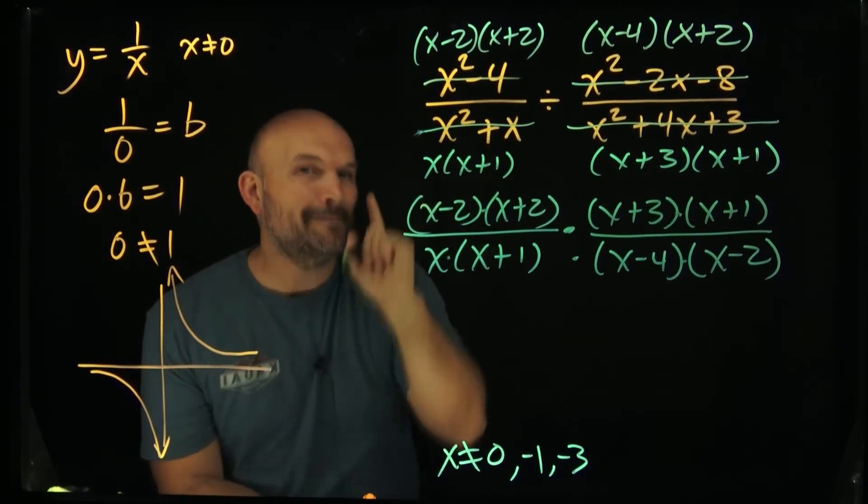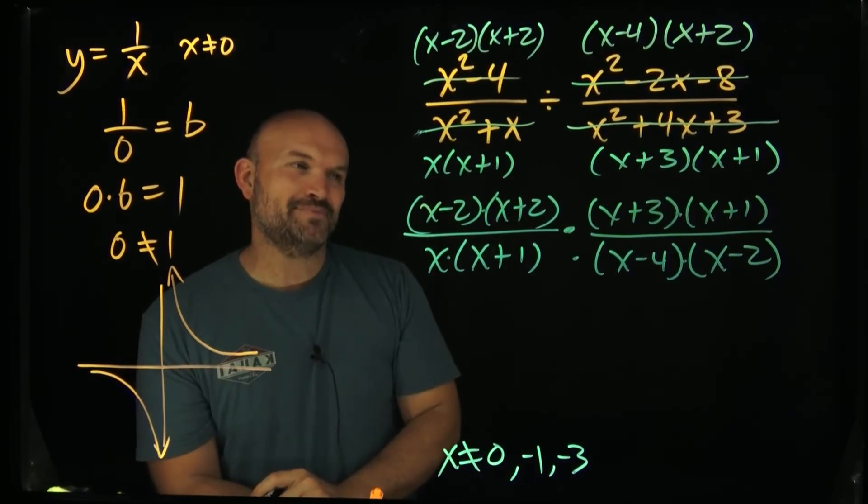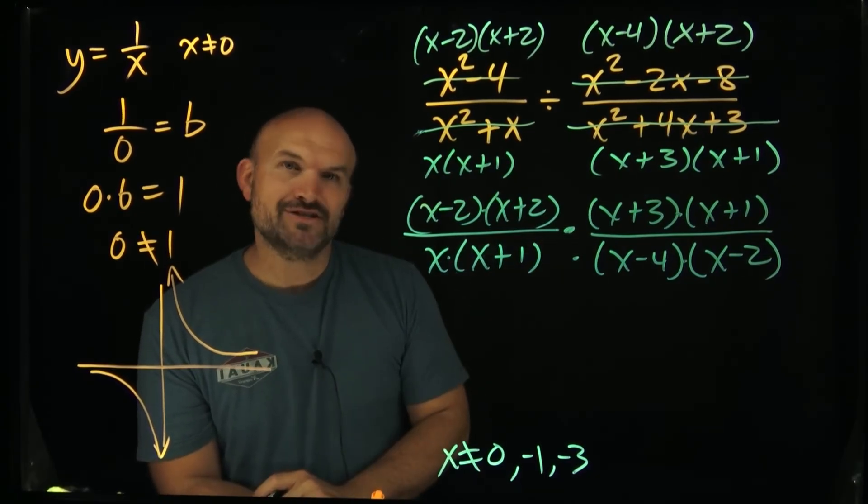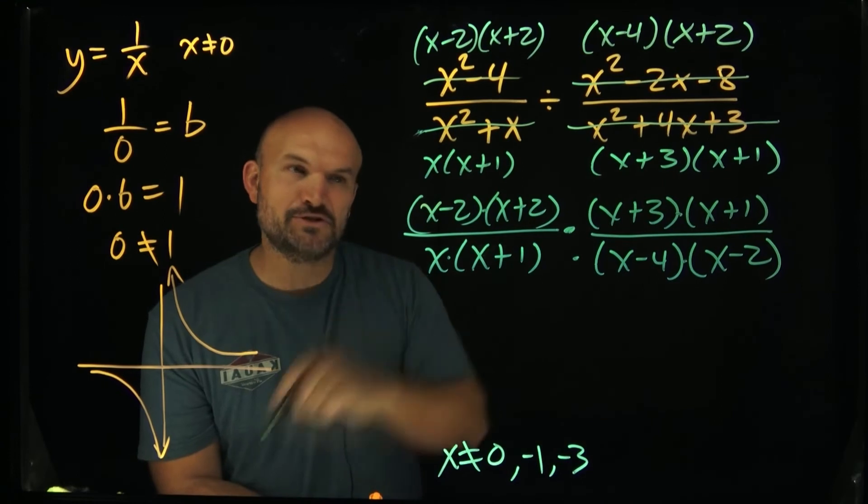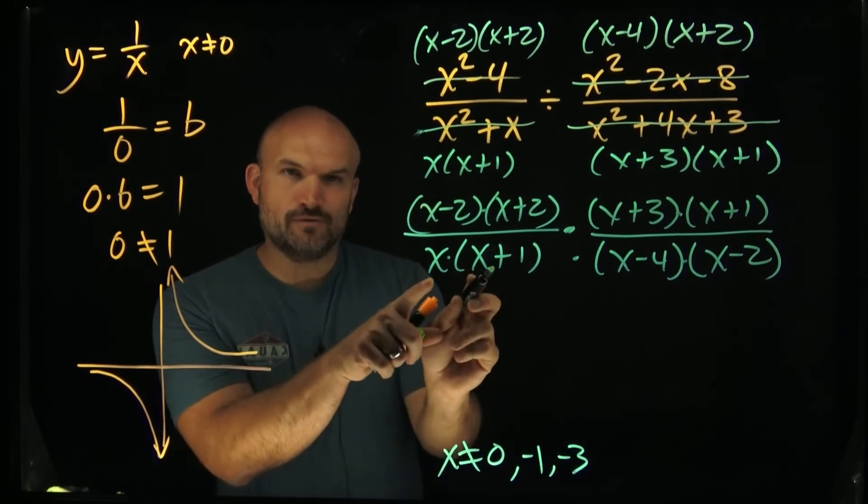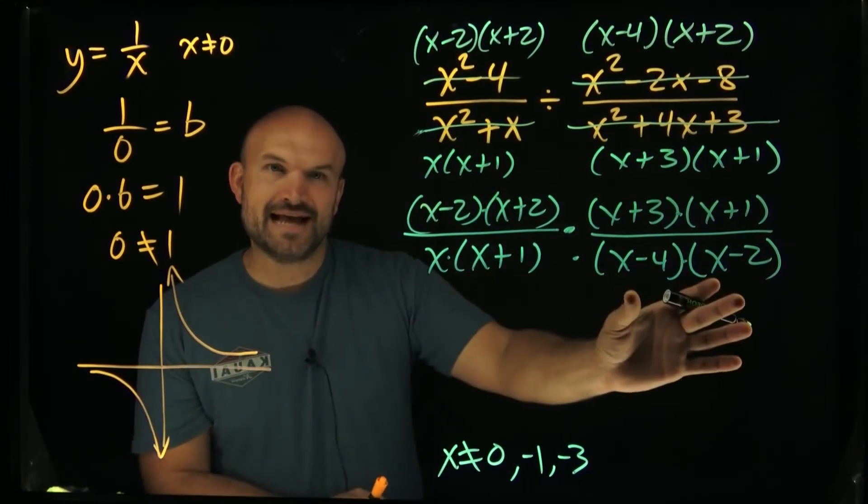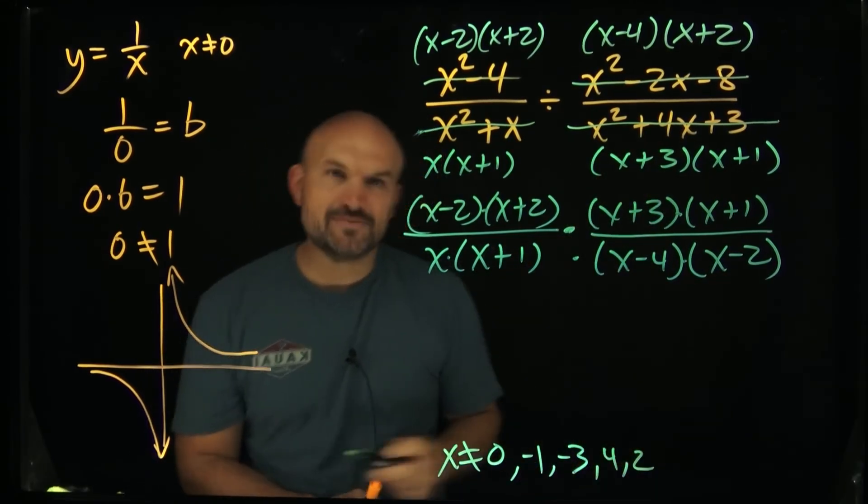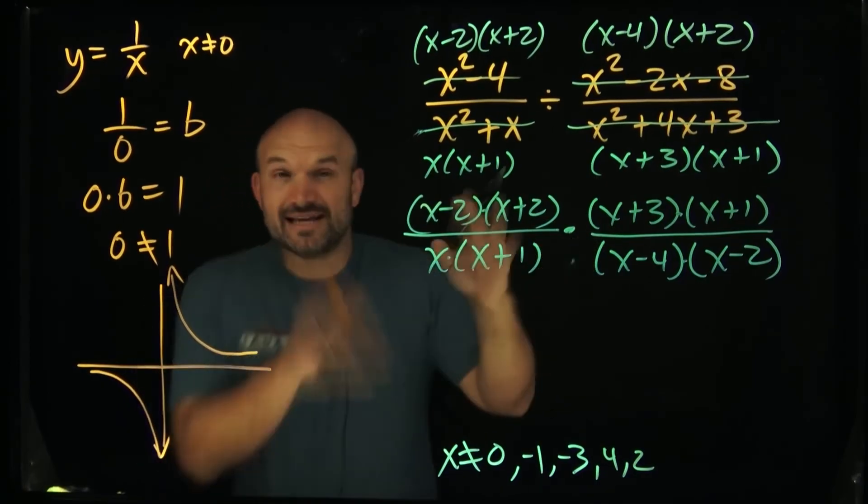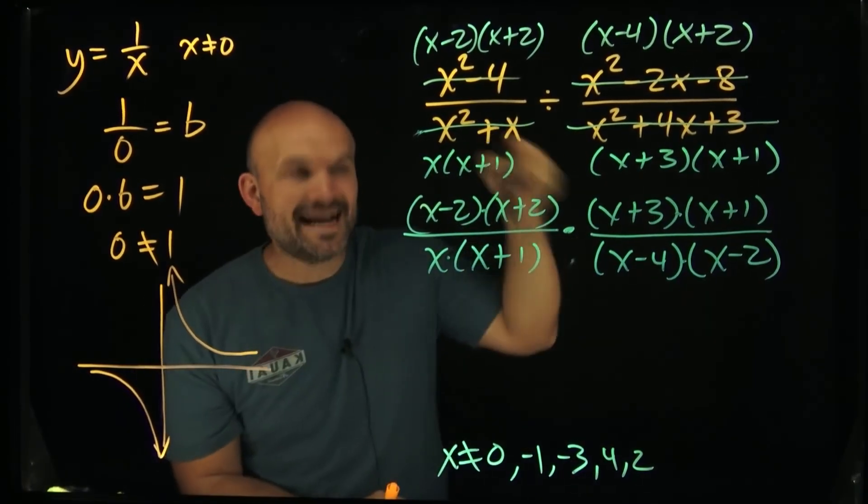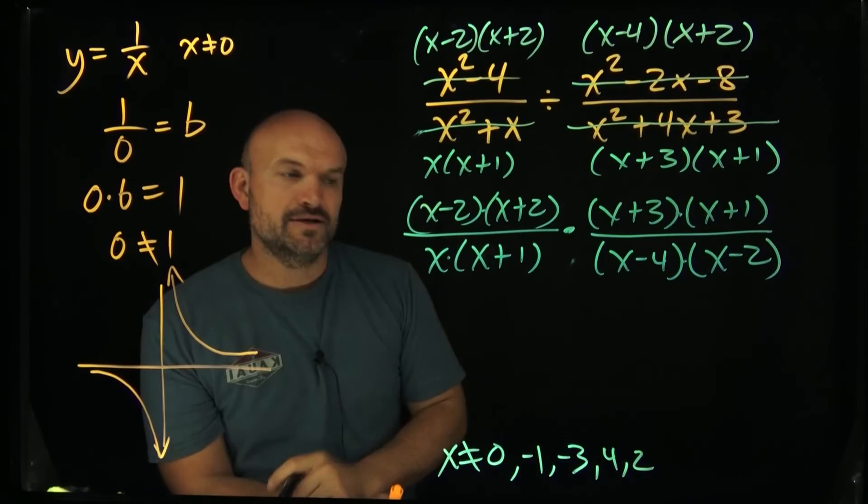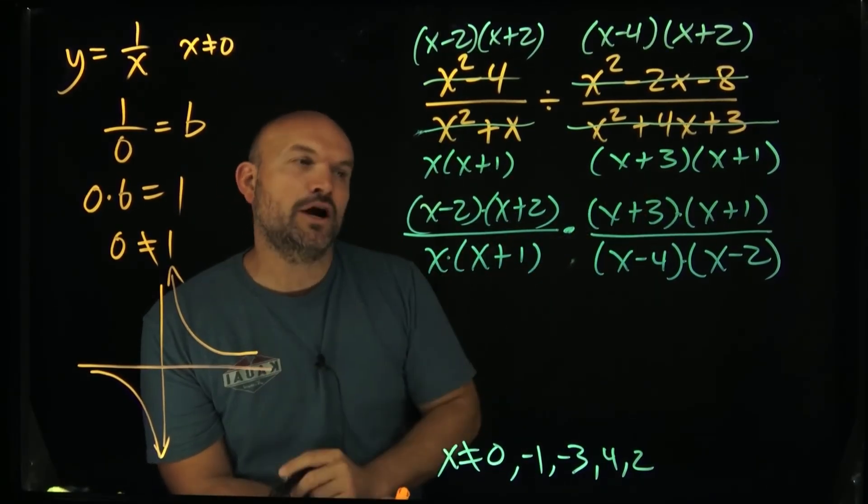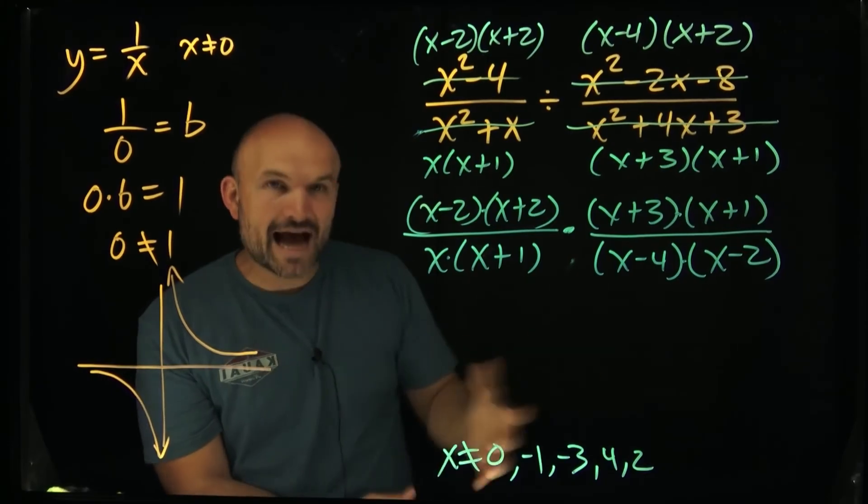But before I go into that I want you to recognize something: I just put some new expressions in the denominator. So guess what I need to do? I need to find those excluded values. The 0 and the negative 1 are still the same, but over here what else did I add? I now have a 4 and a 2. So guess what guys, how this expression is written, just like if this was the original problem, I cannot have 0 in my denominator. So therefore 4 and 2 are going to make my denominator 0, so therefore they are also going to be excluded values.